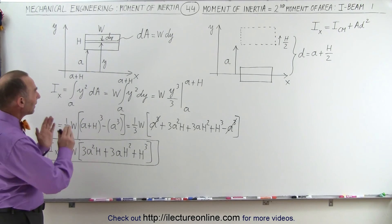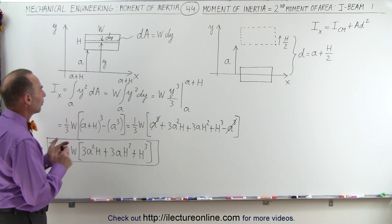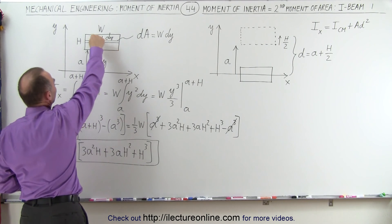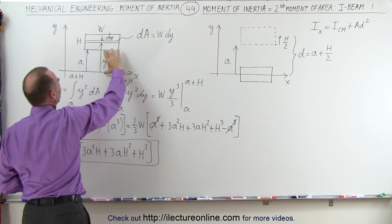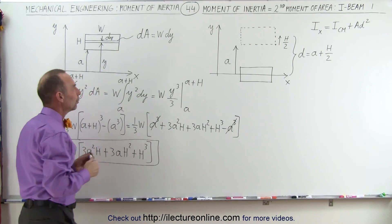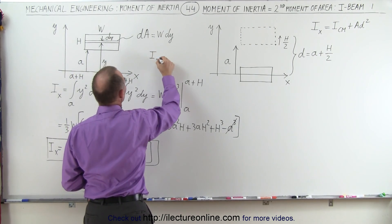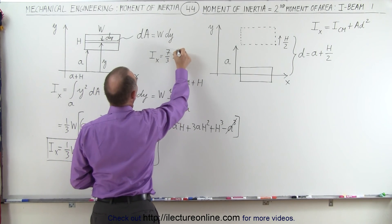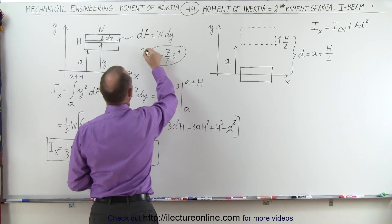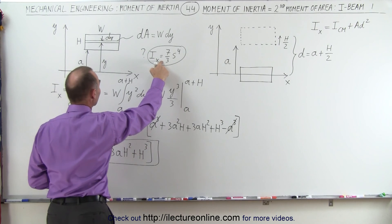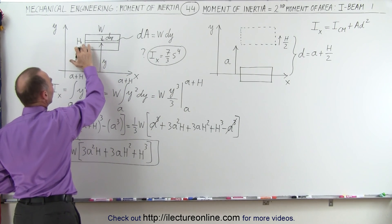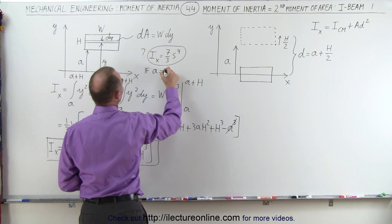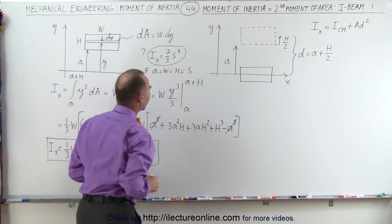Now, to show that this is actually a reasonable solution — remember in the previous video, we found the moment of inertia of a square section S by S, a distance S away from the x-axis, and we ended up getting I_x equal to seven-thirds S to the fourth power. So this answer should reduce to that if we let A equals S, H equals S, and W equals S.